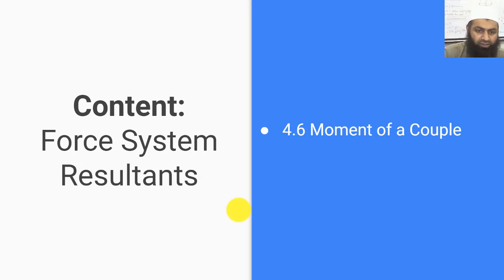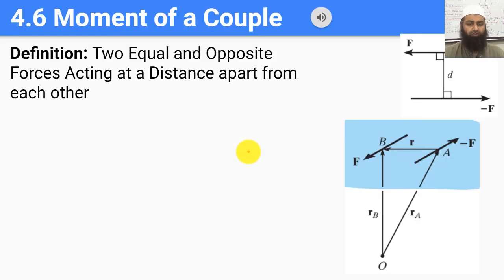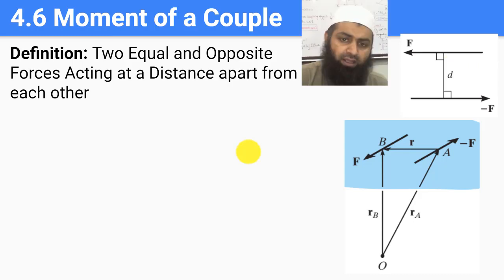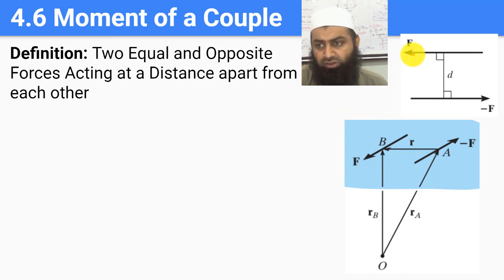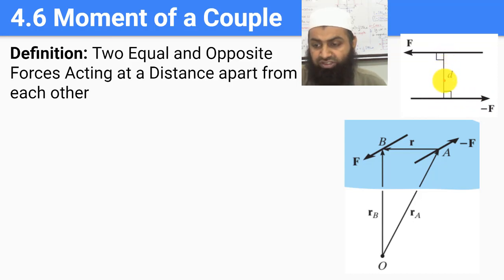In our previous lectures we were looking at moments, which was just the tendency of a force to produce rotations about any given point. In this lecture we would be looking at a very specific type of moment called the moment of a couple. The basic concept is that whenever we have two forces which are equal and opposite and they are separated by a distance d. For example, we have this force f pointing towards the left and a similar force minus f pointing towards the right, and they are not acting at the same point but acting at a distance d apart. This is what we call a couple of forces.